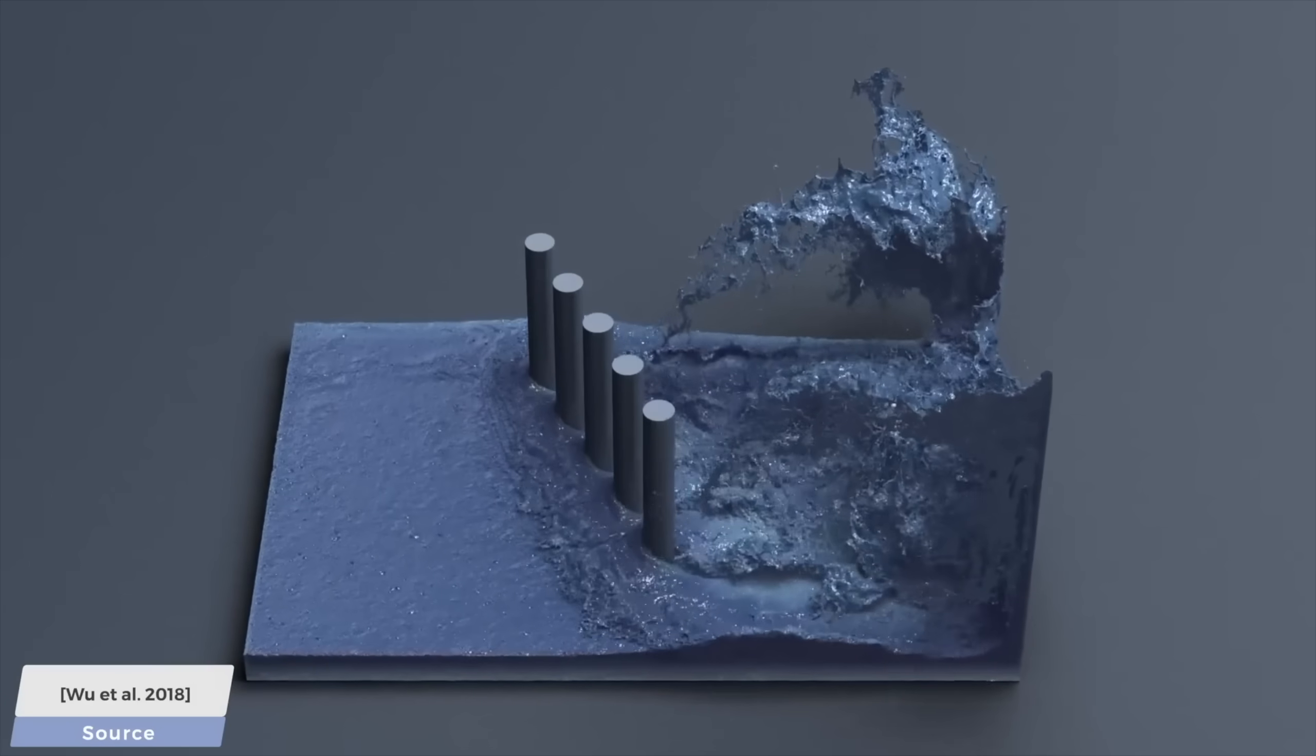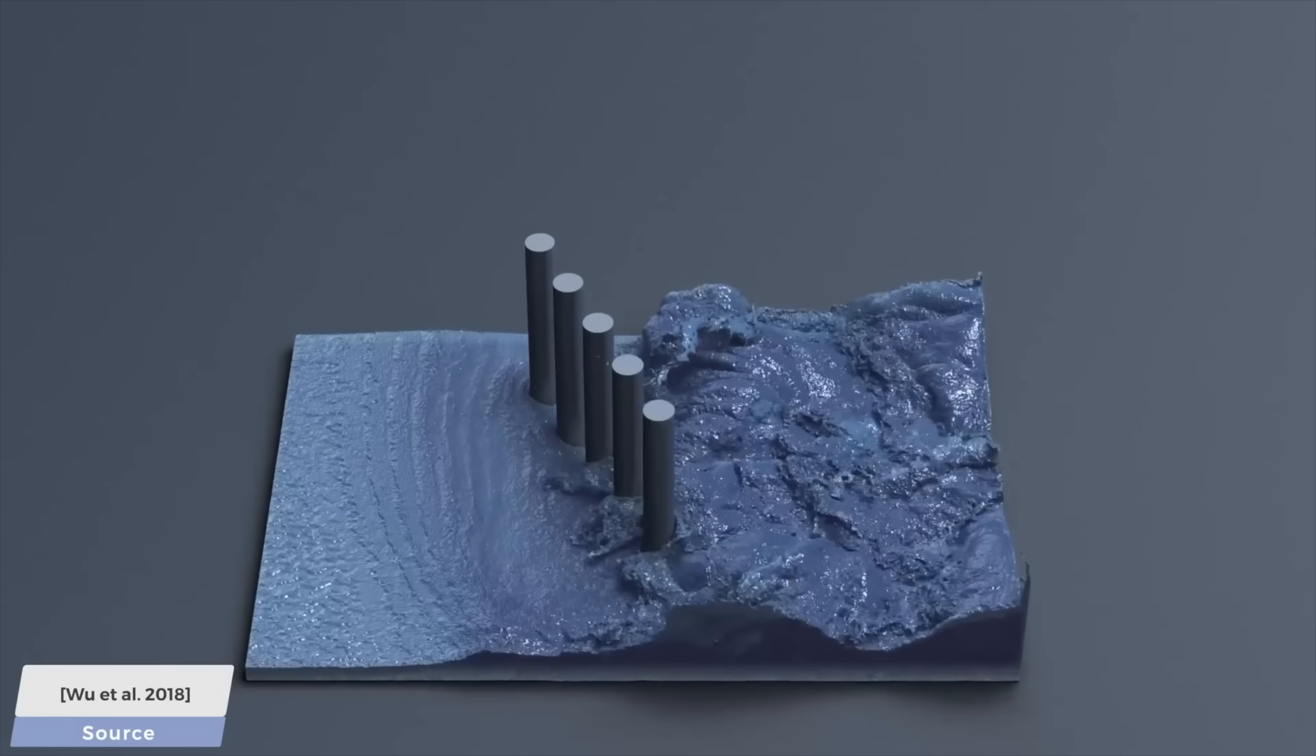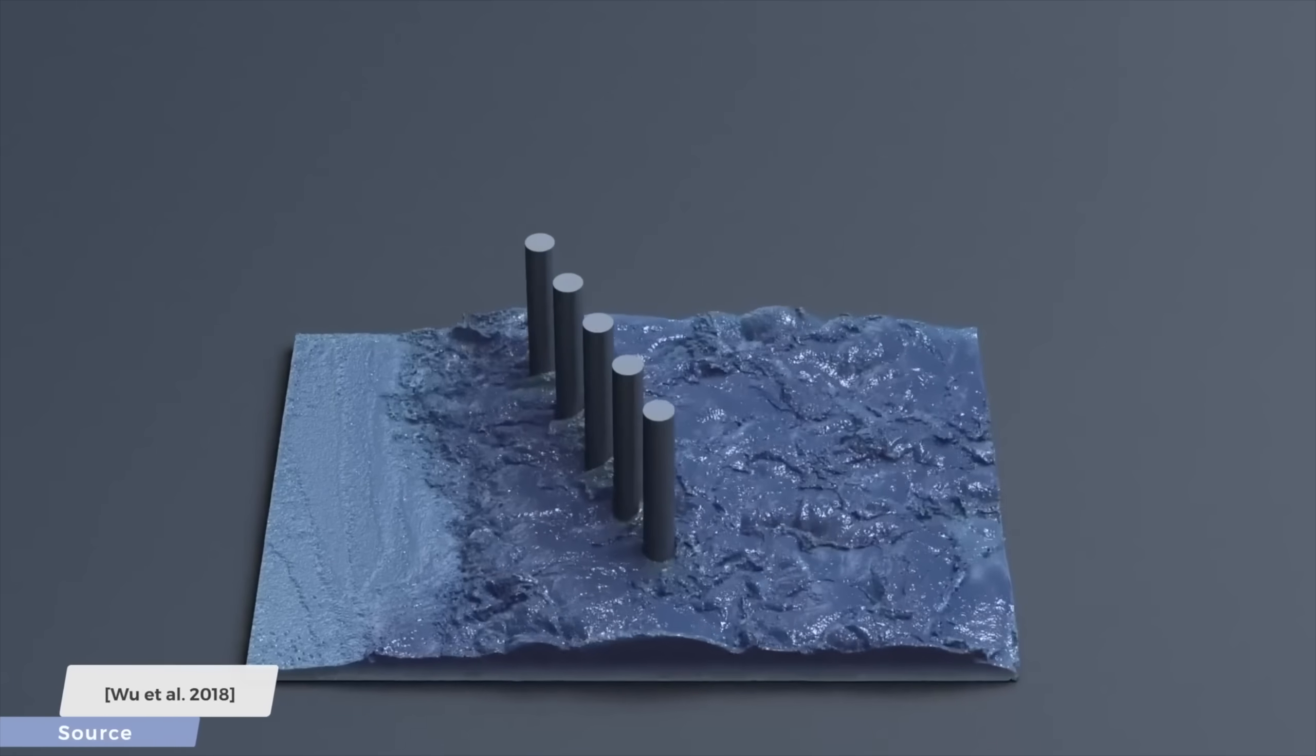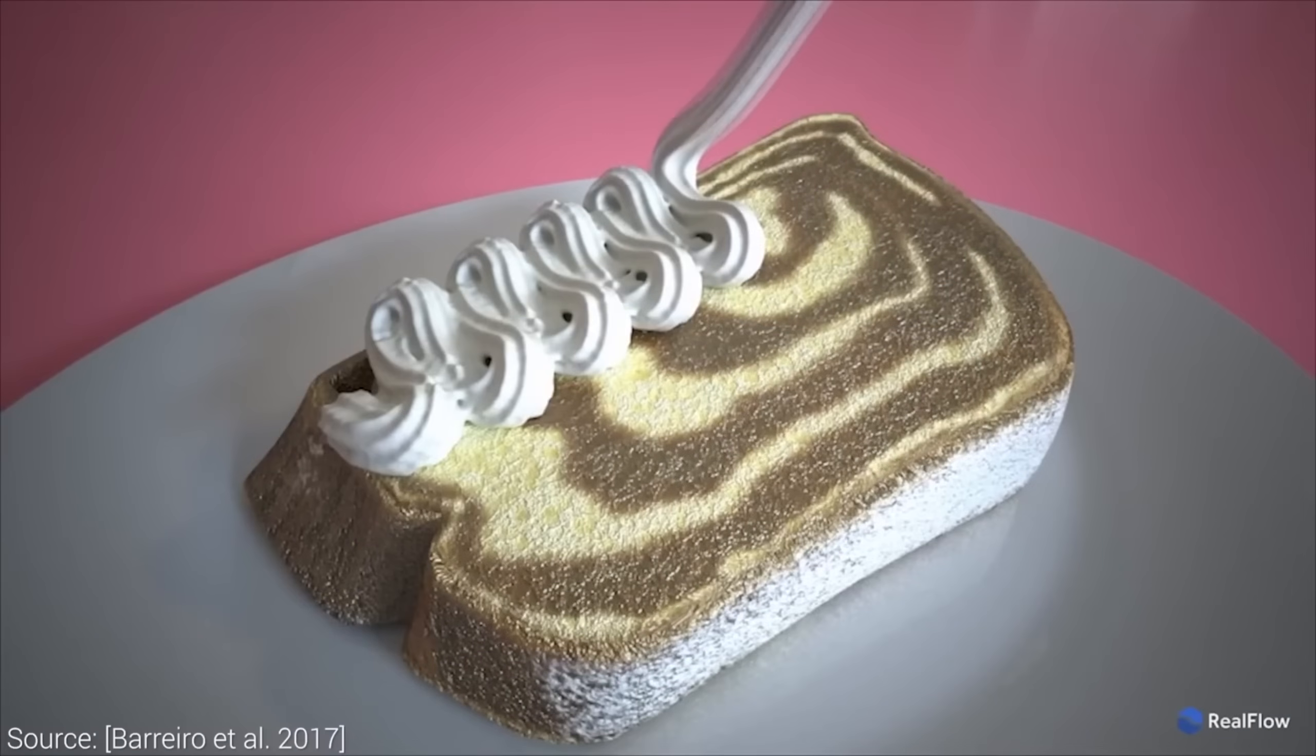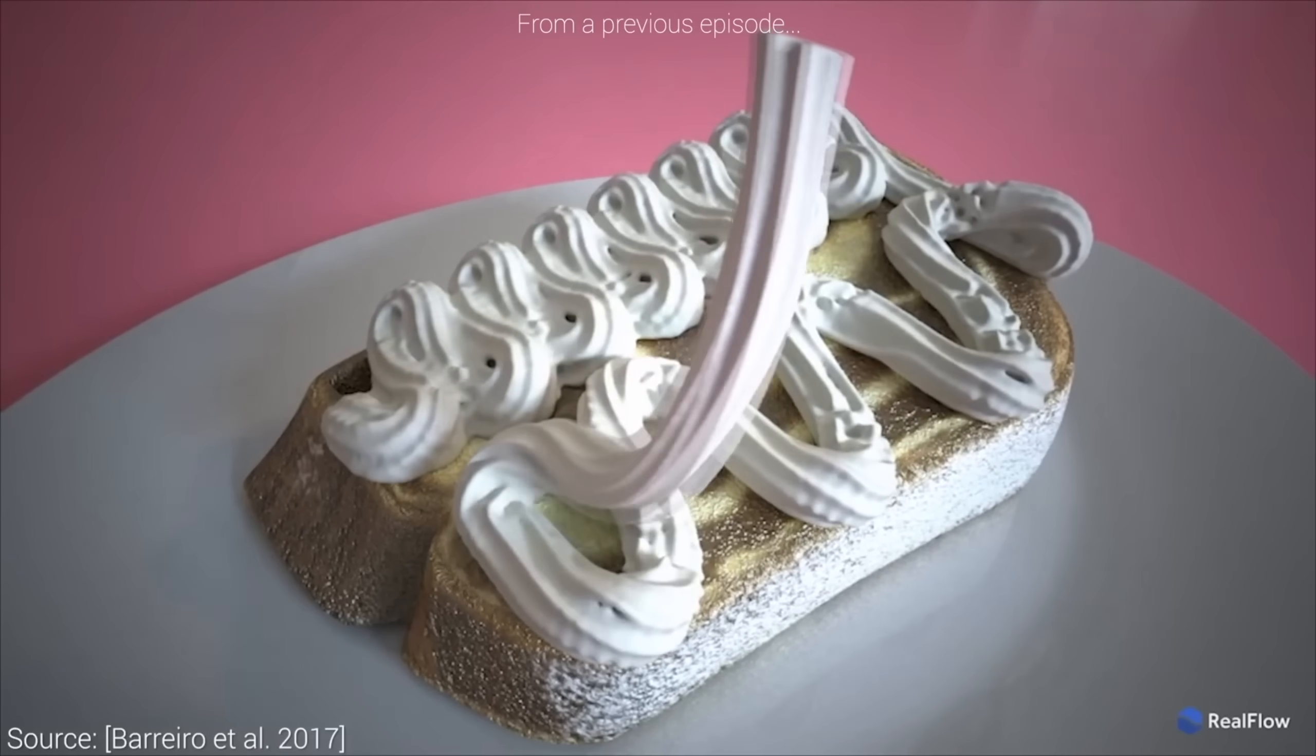These billions of particles, instead of interacting with each other, they interact with the central government. Now, unlike real government centers, this is actually really efficient. And then, it sends the results back to each house. This we call grid to particle transfer.